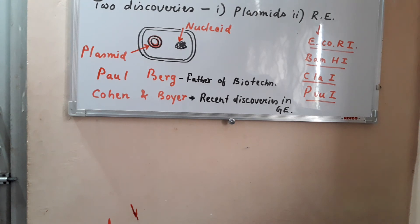PBR322 is a very important cloning vector. PBR322 is an artificial, synthetic plasmid.